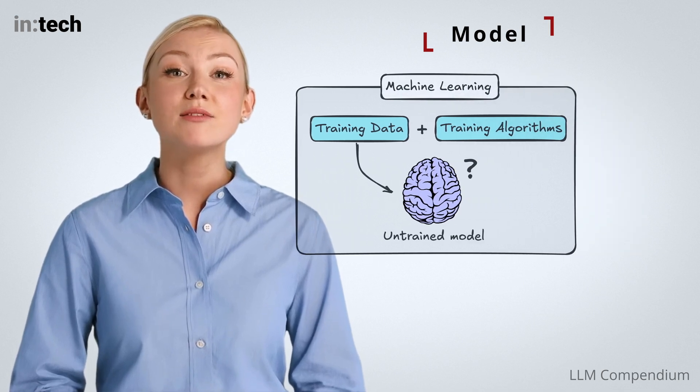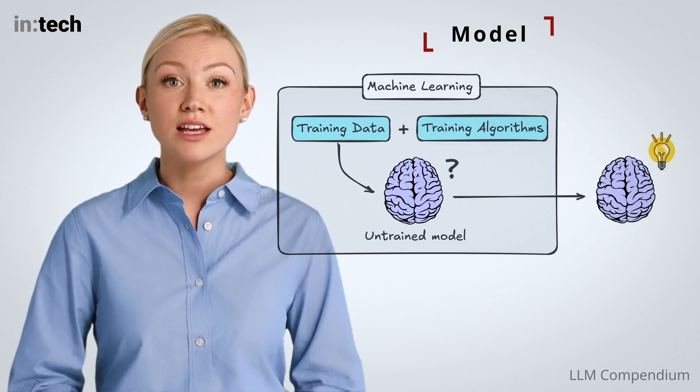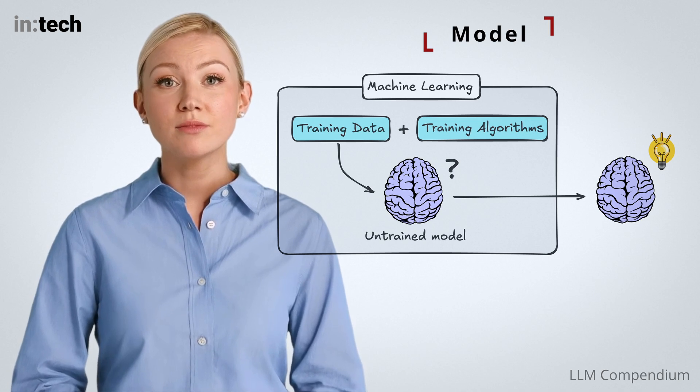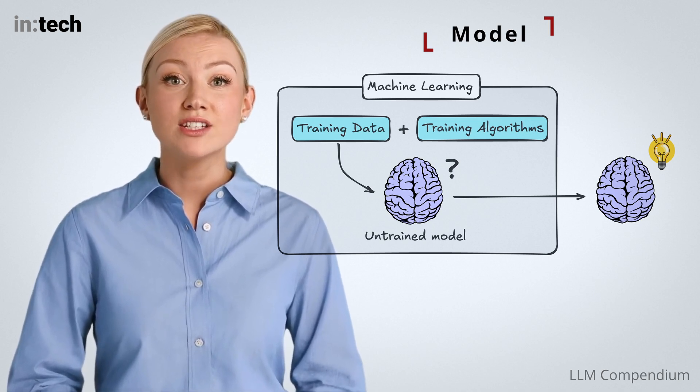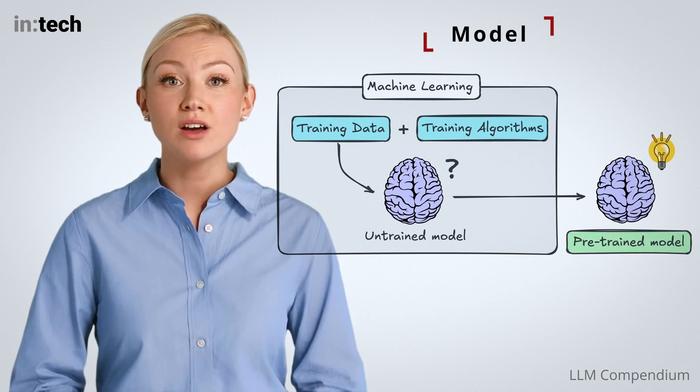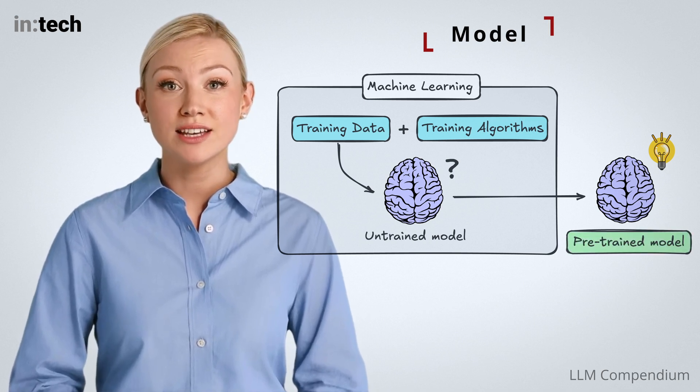the brain comes out of it empowered with certain knowledge and often a narrow set of skills. The result of this training process gives us a digital brain that is often referred to as a pre-trained model, due to the process that transformed its initial state.